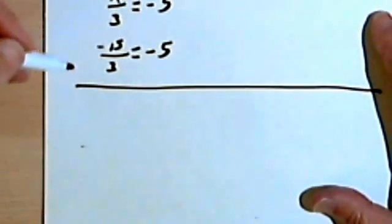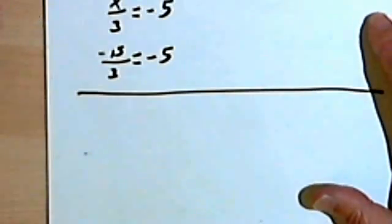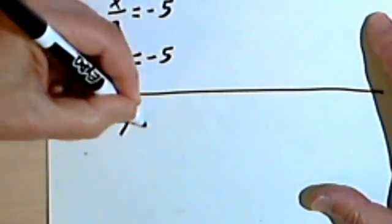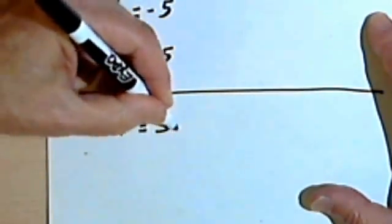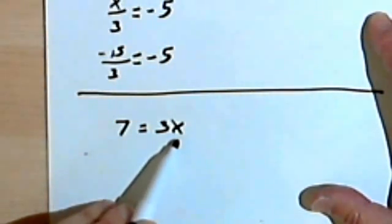Now it doesn't matter whether we get the x isolated on the left side of an equation or the right side of an equation. So for instance, if I was given the problem 7 equals 3x, my goal is to get that x by itself.